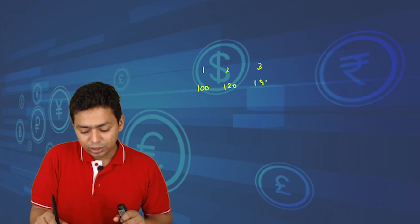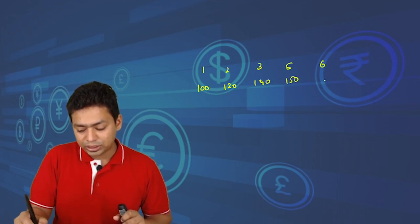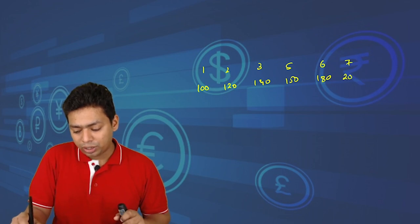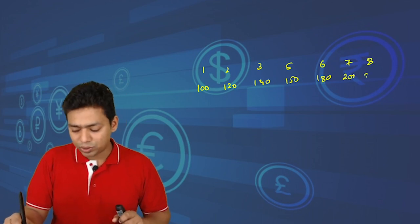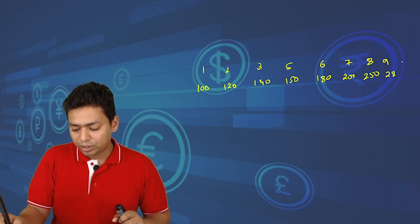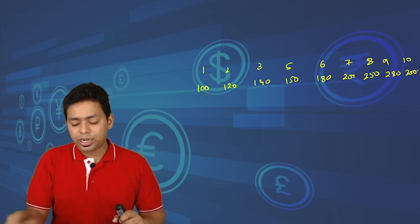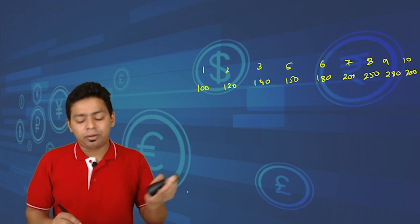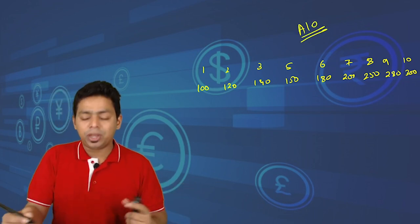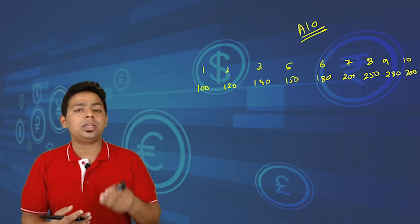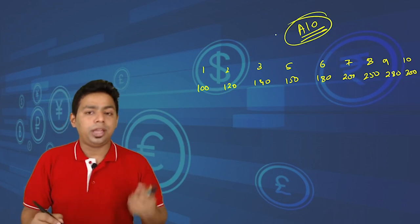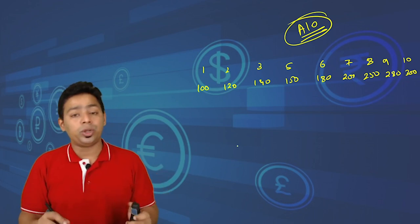Let's take a simple example. There are 10 transactions: the values are 100, 120, 140, 150, 180, 200, 250, 280, and 300. I have arranged the data in ascending order, because whenever we compute median or percentiles, we must arrange data in a logical sequence. Rule 10CA specifically requires ascending order.